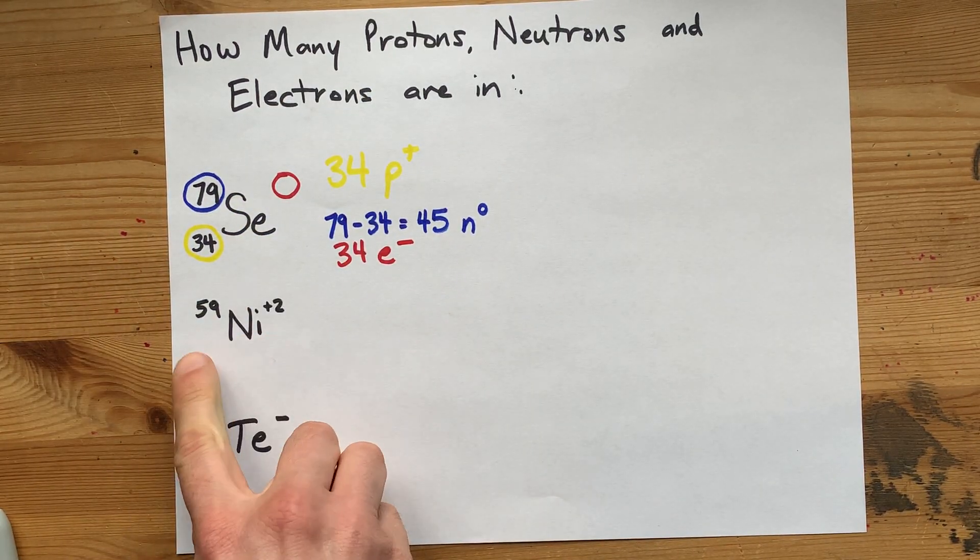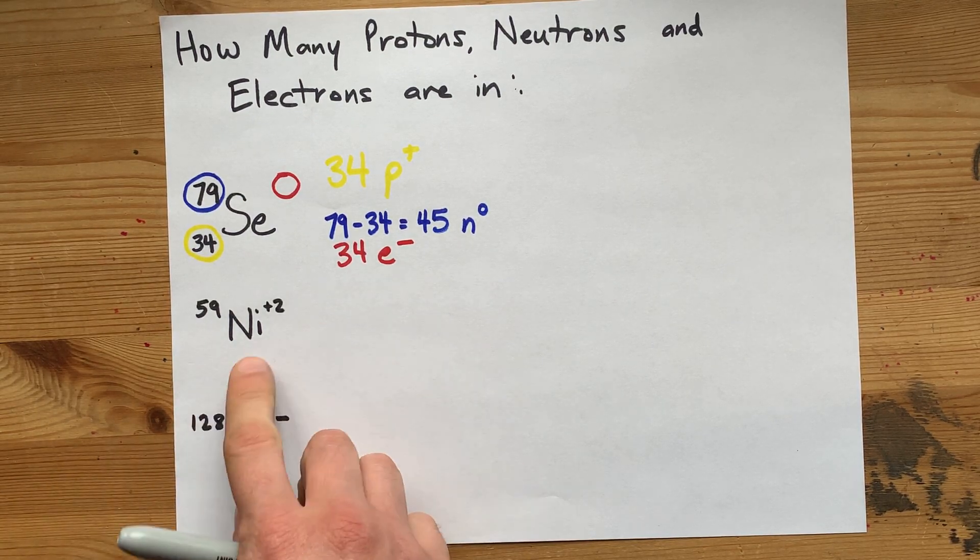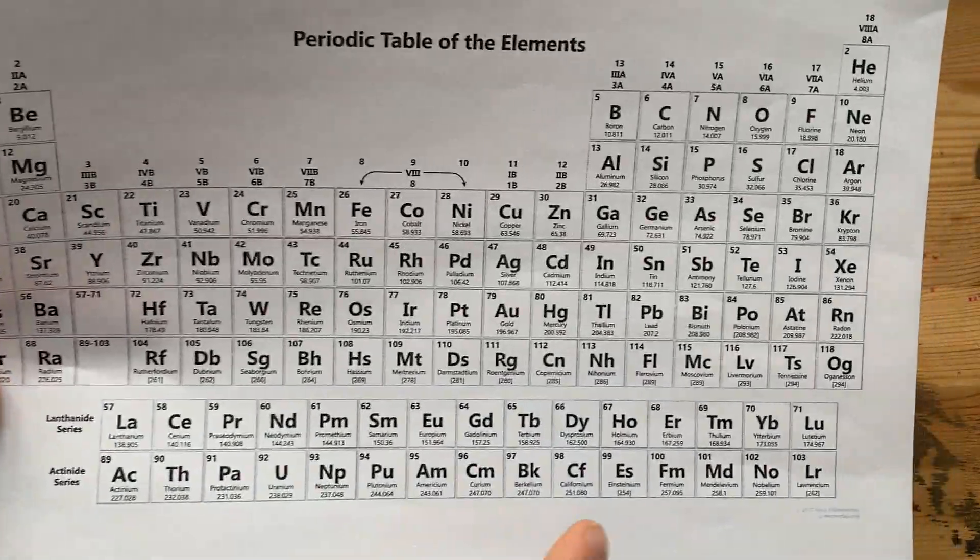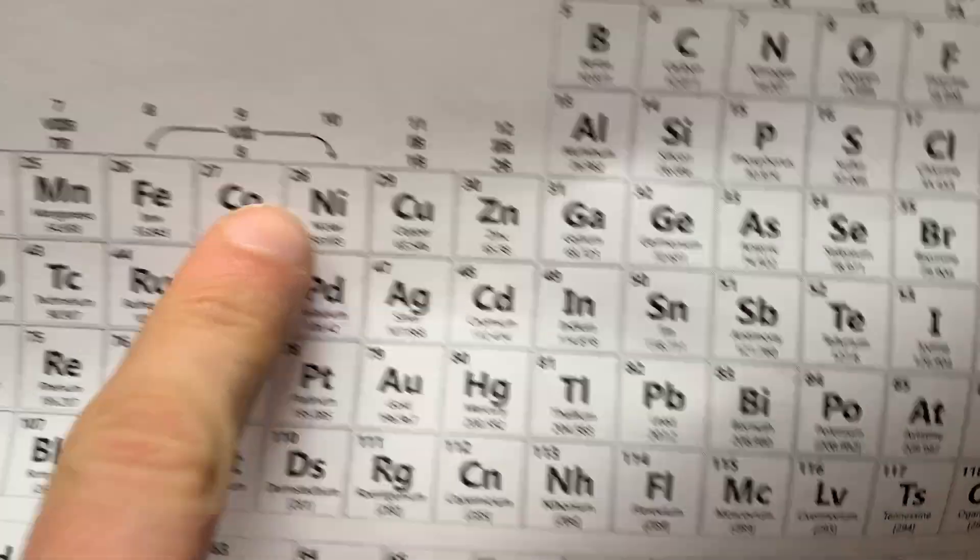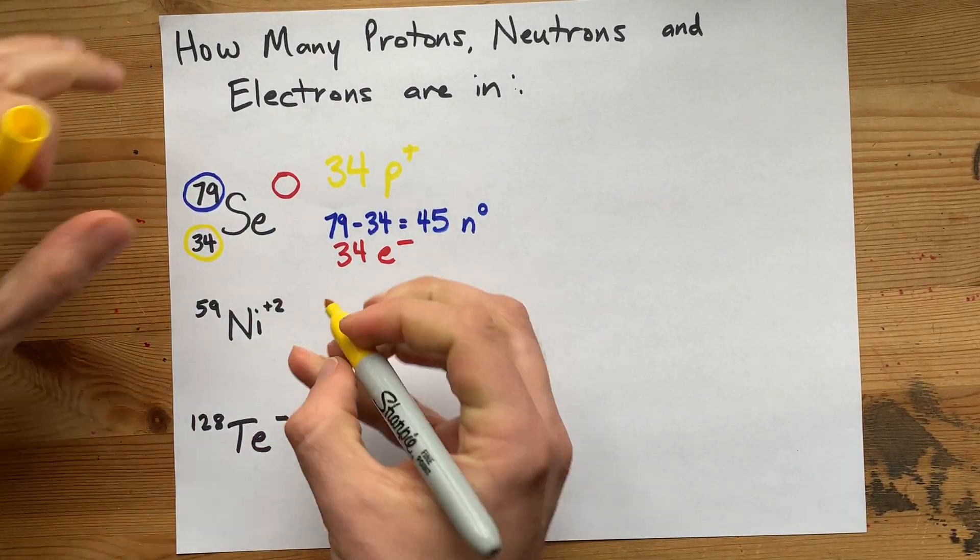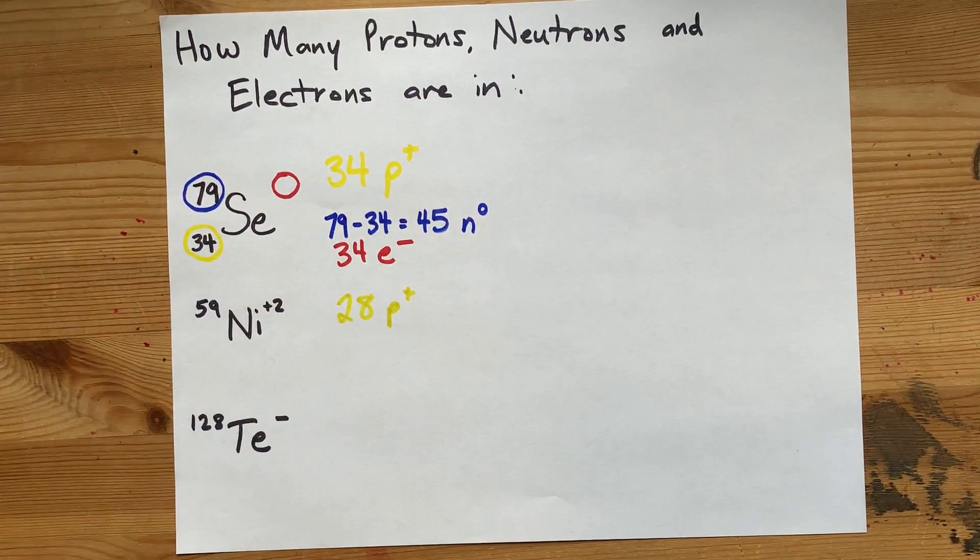Let's do it again. There is no number in the bottom left-hand corner here. So, how are we supposed to know how many protons there are? The periodic table will tell us that all nickel atoms have 28 protons by definition. It is the element itself that is telling us that.